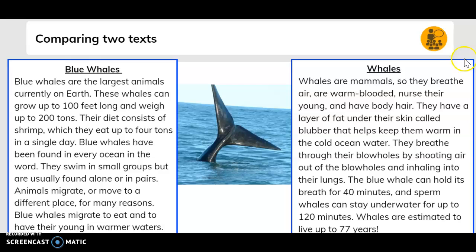Whales are mammals, so they breathe air, are warm-blooded, nurse their young, and have body hair. They have a layer of fat under their skin called blubber that helps keep them warm in the cold ocean water.